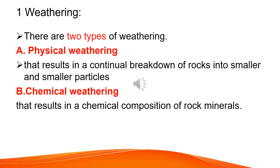Weathering has two types: physical weathering and chemical weathering. Physical weathering results in the continuous breakdown of rocks into smaller pieces and smaller particles. Chemical weathering results in the chemical composition changes of rock minerals. If that happens, it is known as chemical weathering.